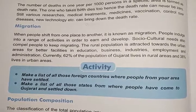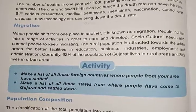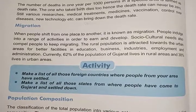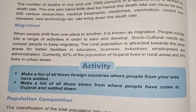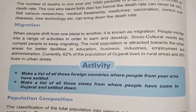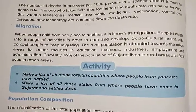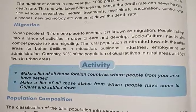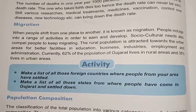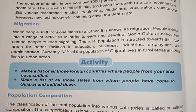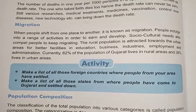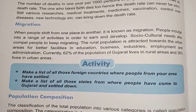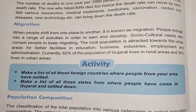Next we have migration. When people shift from one place to another, that is known as migration. People indulge in a range of activities in order to earn and develop. Social and cultural needs also compel people to keep migrating. The rural population is attracted towards urban areas for better facilities in education, business, industries, employment, and administration.